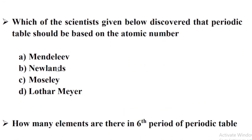Which of the scientists given below discovered that the periodic table should be based on the atomic number? Option C: Moseley.